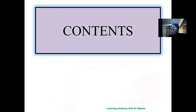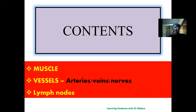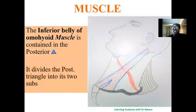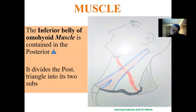The contents of the posterior triangle include muscles, vessels — arteries, veins, and nerves — and lymph nodes. For the muscular component, we have the inferior belly of the omohyoid, which divides the posterior triangle into the superior occipital triangle and the inferior supraclavicular or subclavian triangle.